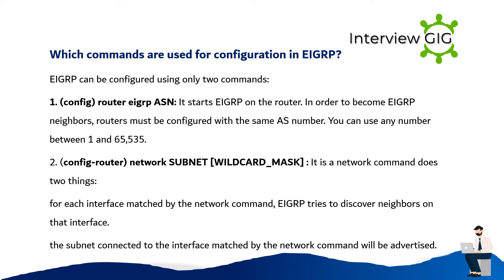Which commands are used for configuration in EIGRP? EIGRP can be configured using only two commands. First: router eigrp ASN — this starts EIGRP on the router. In order to become EIGRP neighbors, routers must be configured with the same autonomous system number. You can use any number between 1 and 65535.